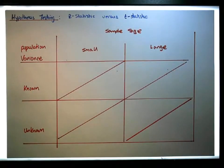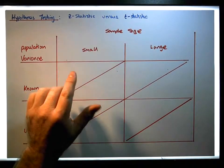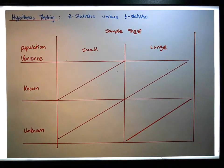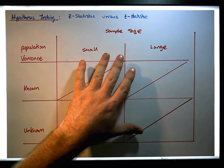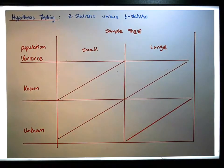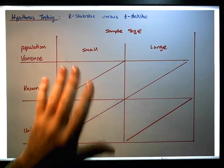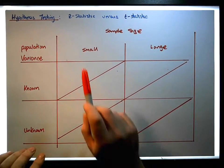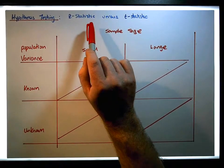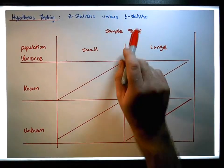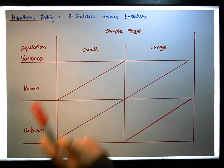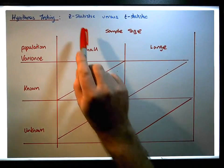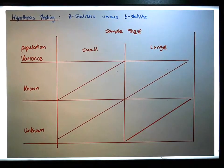Hi guys, this is Jonathan Lambert with Maths and Stats. In this video, which has probably been a long time coming, we have another video in our series dealing with hypothesis testing, trying to demystify a question that I've been asked many times: when should we use a z statistic over a t statistic, or what are the conditions under which these particular statistics are appropriate?